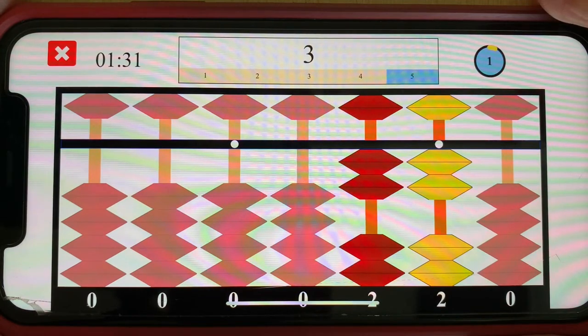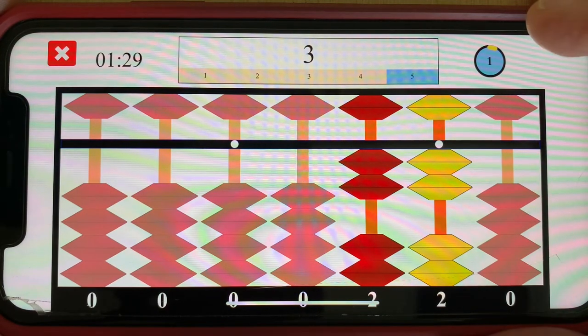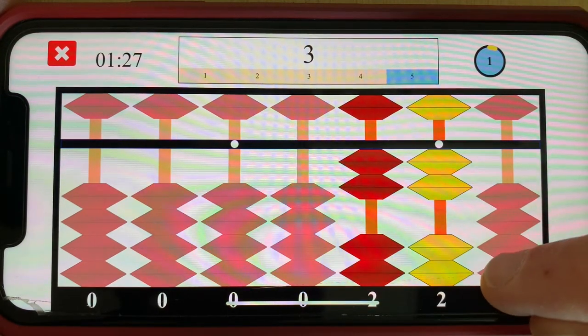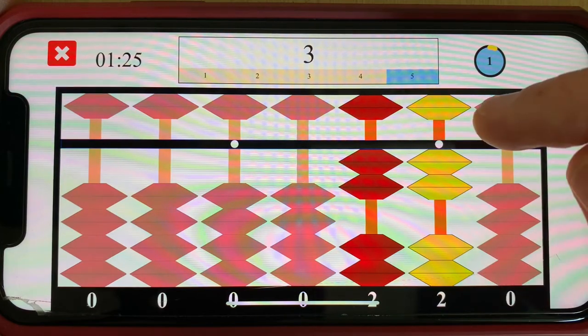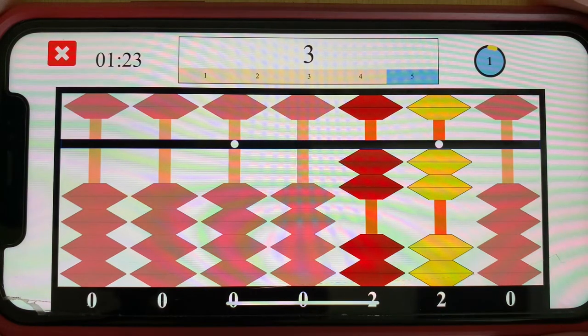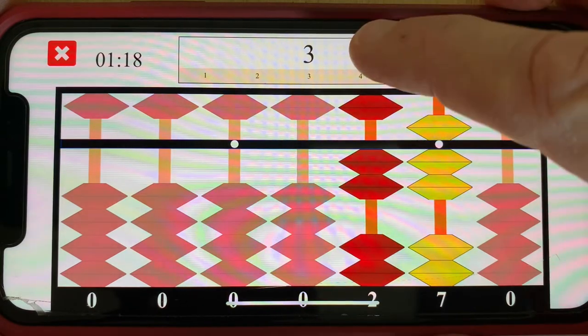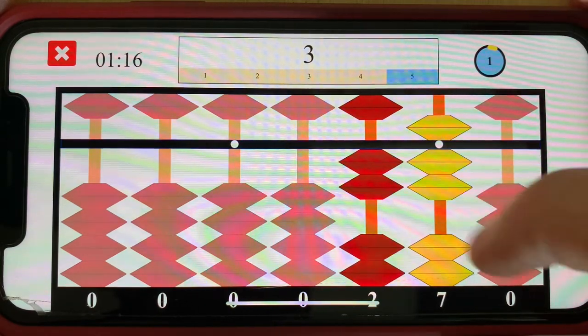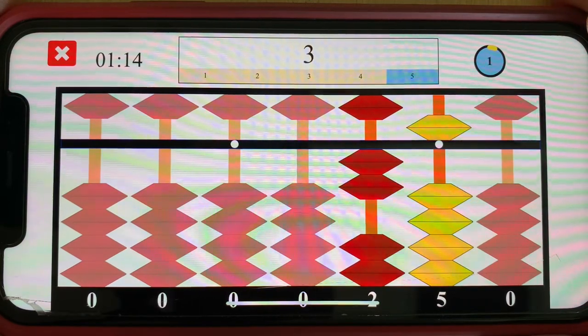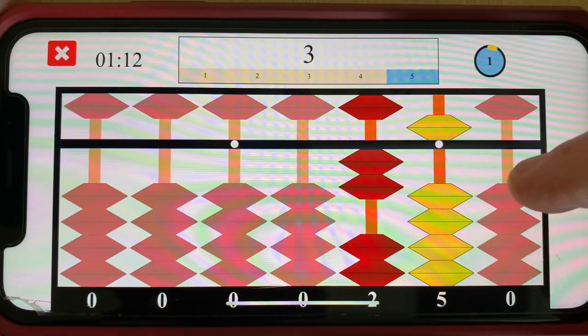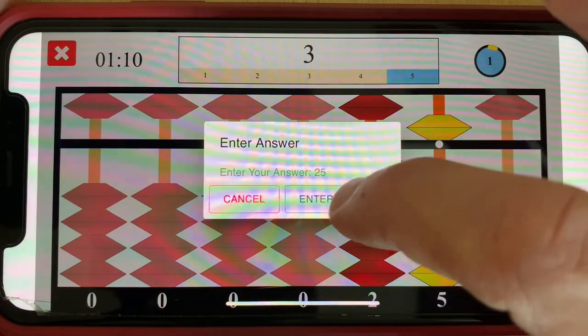And then finally I'm going to add three. Well as you can see I only have two earthly beads but I also have the five bead. So that's our five pair addition rule. We add five and we subtract three's five pair two. For a final answer of twenty-five.